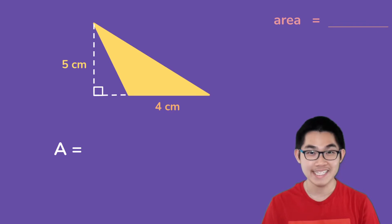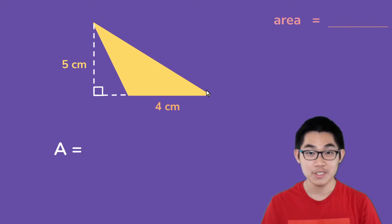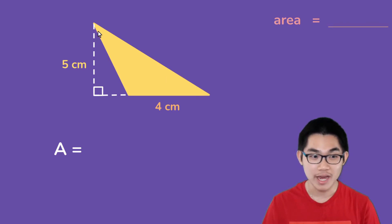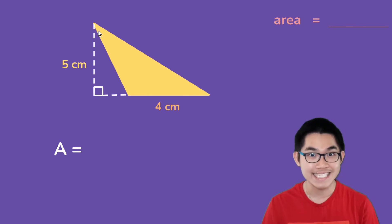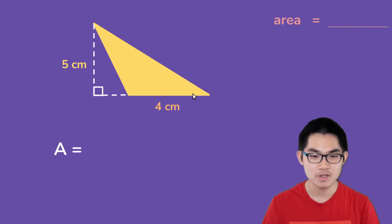So we want to calculate the area of this yellow triangle here. First of all, what does the word oblique mean? It means that the yellow triangle does not have a right angle inside the triangle. So this corner is not 90 degrees, this corner is also not 90 degrees, and this corner is not 90 degrees.